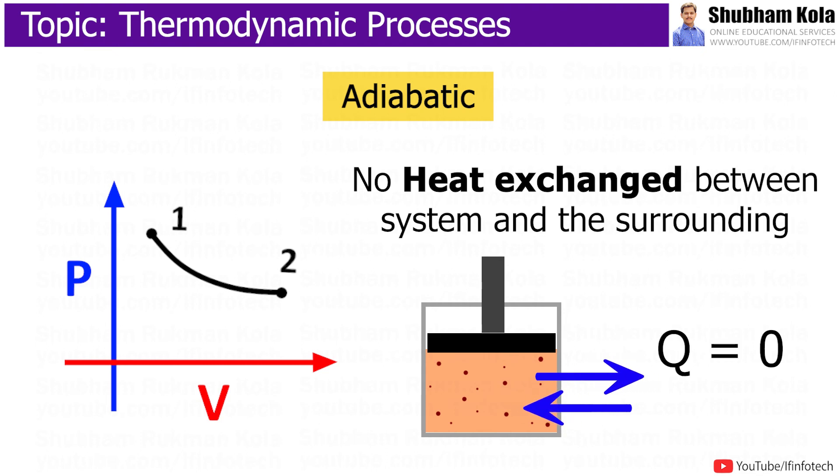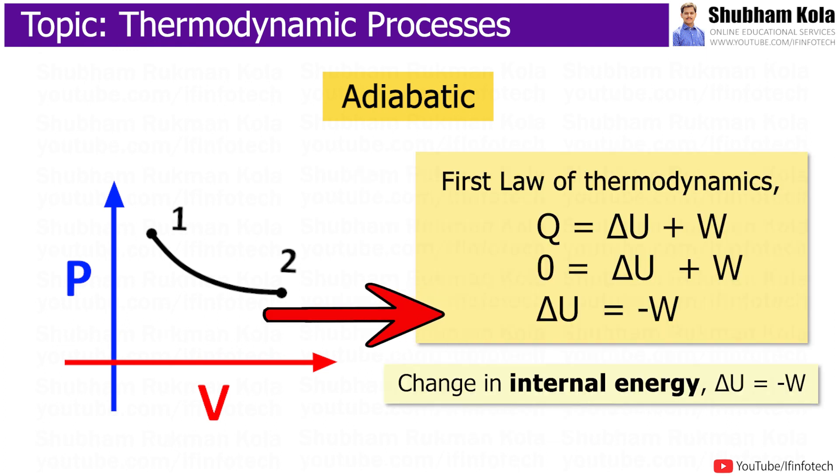Adiabatic process occurs without transferring heat and mass between system and surrounding. Since Q equals zero for an adiabatic process, from the first law of thermodynamics, we get change in internal energy equals negative work done. Thus, internal energy will increase if the work done is negative and vice versa.